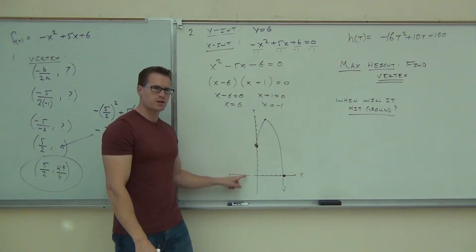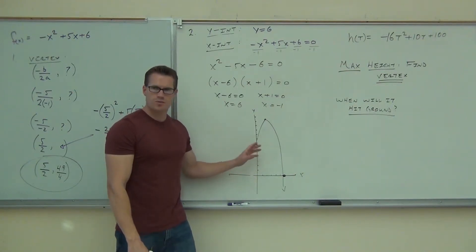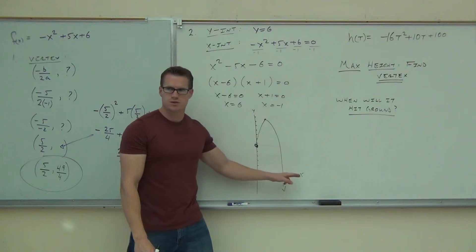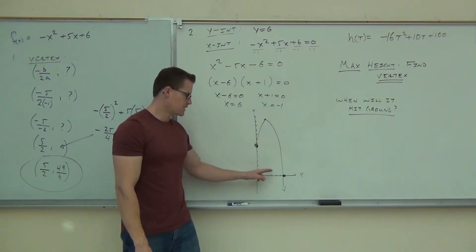Now, is it going to hit the ground this way? No, that's negative time. So, on your parabola, sure, you're going to come up with two intercepts.